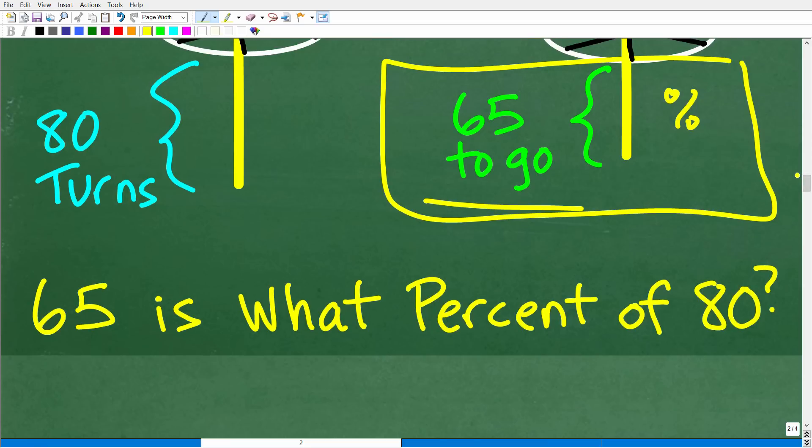And the question is the following: 65 or 65 turns is what percent of the 80 turns needed to completely close this valve. So the actual math question here is 65 is what percent of 80?